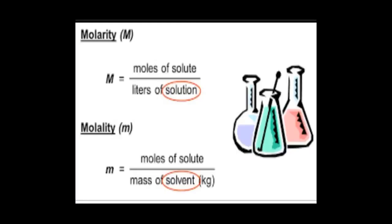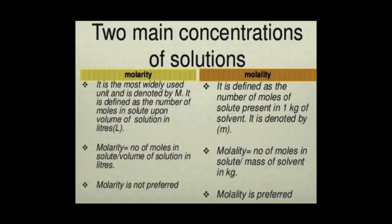The most important difference between molarity and molality is: in molarity we take the volume of the solution in liters and it is denoted by capital M, while in molality we take the mass of the solvent in kilograms and it is denoted by small m. Another key difference is that molarity depends upon temperature while molality is independent of temperature.